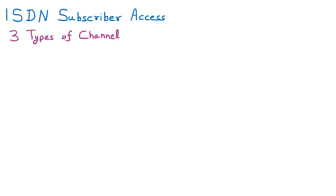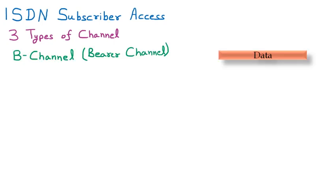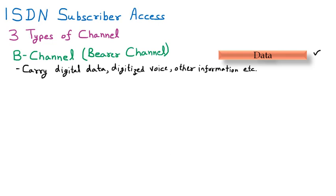The first is the B channel, which is called the bearer channel. It is also called the data channel because data is passed through it. The bearer channel carries digital data, digital voice, and other information. The speed of transmission is up to 64 kbps.